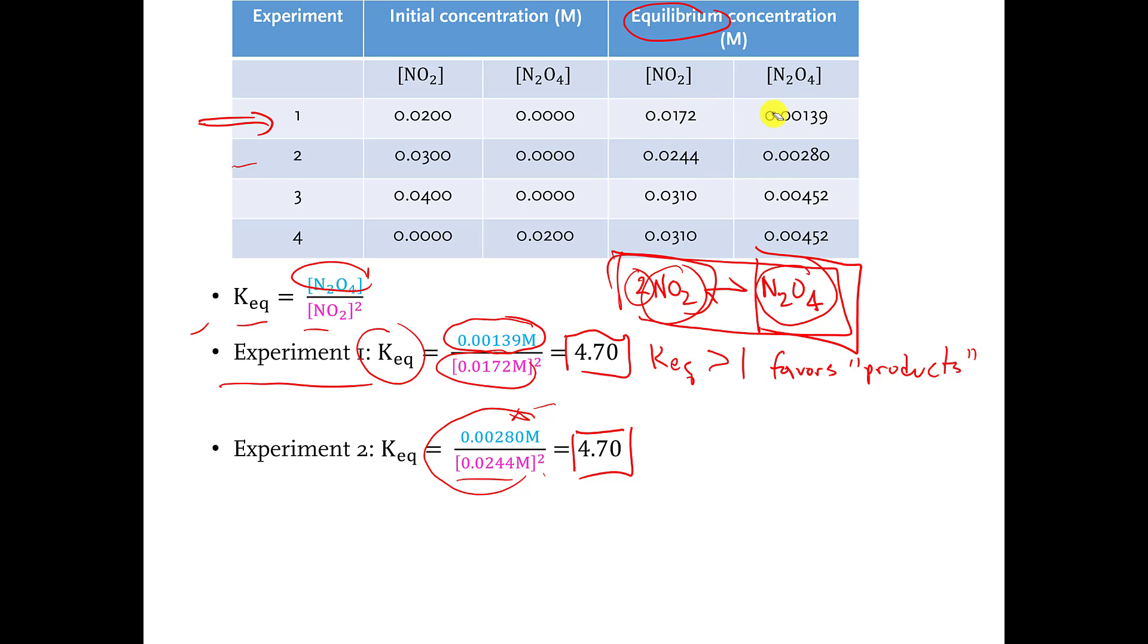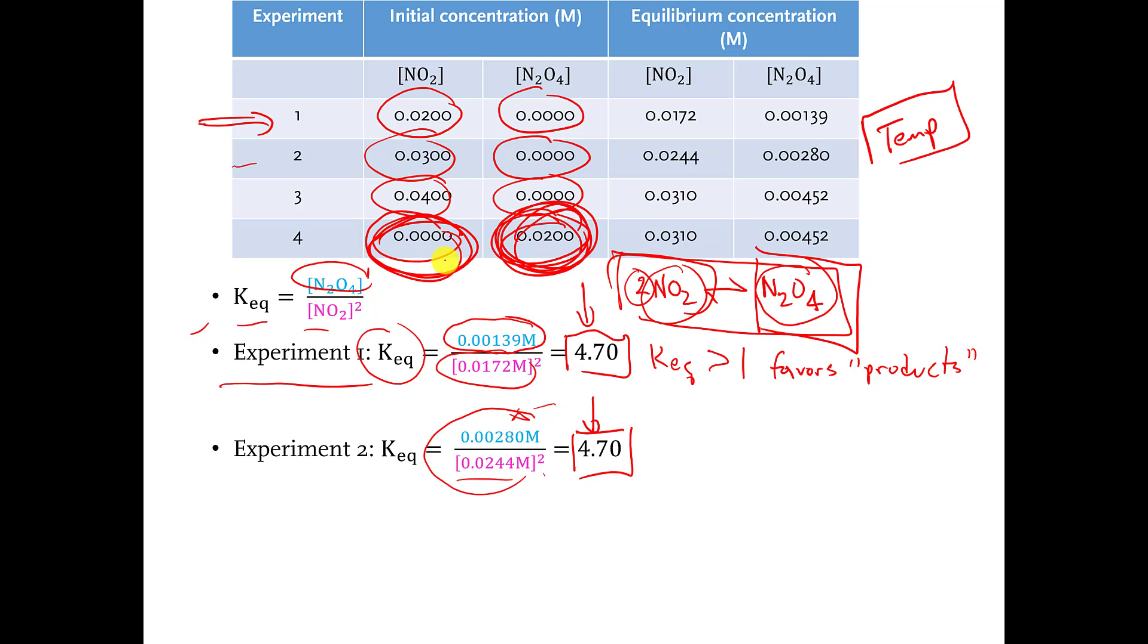The point that this exercise is trying to make to you is that it doesn't matter what concentrations you start with for your chemical reaction. As long as it's the same chemical reaction, and as long as it's basically done at the same temperature, and other conditions are kept the same, you will always end up with the same equilibrium constant. So it doesn't matter if I start with all N2O4 and none of the NO2s, if I start with everything on the right side of the reaction and nothing on the left side of the reaction, if I let the reaction go to equilibrium, even in experiment 2, the equilibrium constant that I'm going to end up with is 4.70.